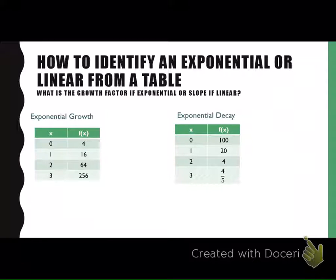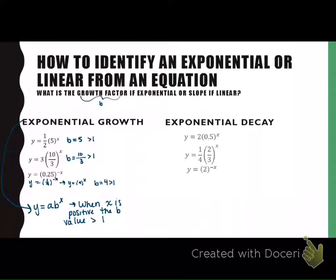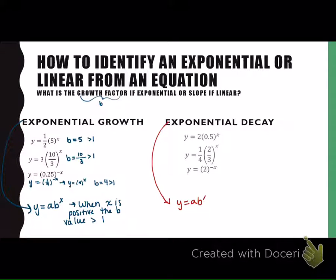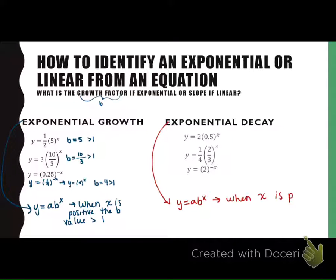So, how to identify an exponential or linear from a table. All right, so from there, we have exponential decay. How do you know something is exponential decay? Mackenzie? Your B value is between 0 and 1. So, but when X is positive, because you still have to make X positive first, your B value is between 0 and 1. Your decay factor is between 0 and 1.